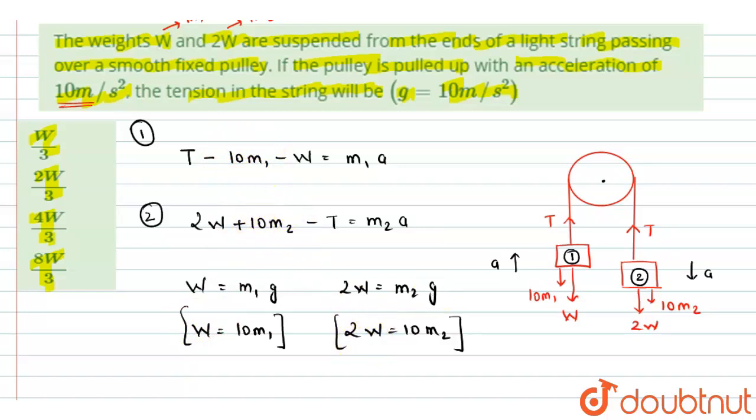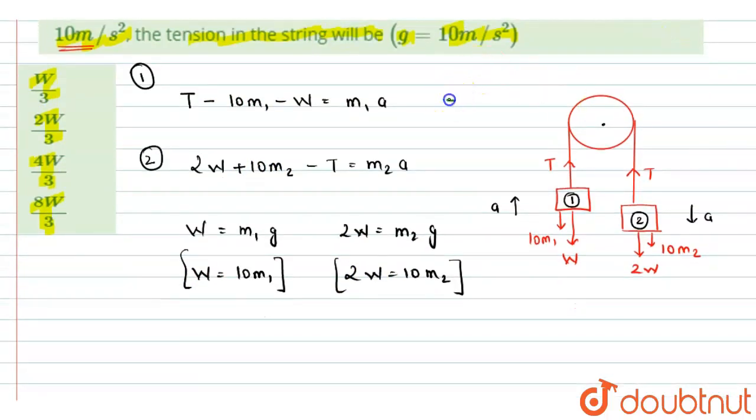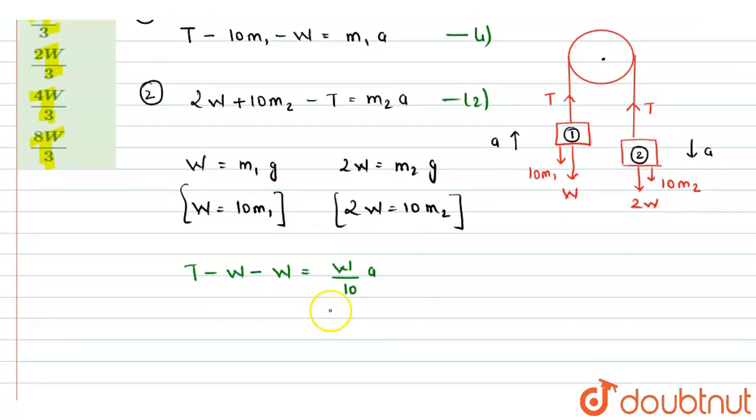So now from these two equations we can see that 10 m1 is nothing but equals to w. So I can replace this term 10 m1 by w. And here this 10 m2 can be replaced by term 2w. So let me rewrite the equations. This equation 1 and this equation 2 can be now rewritten as T minus w minus w equals to this m1, I can replace by w by 10, so w by 10 times of a. And equation this I can write further as T minus 2w equals to w a by 10. This is equation 3.